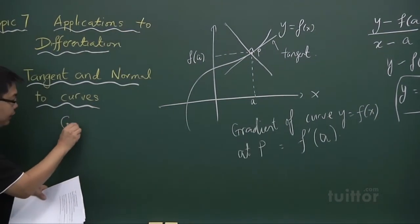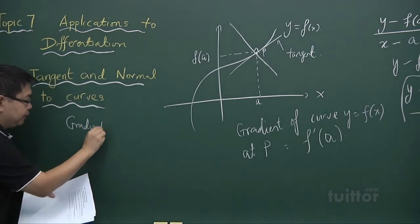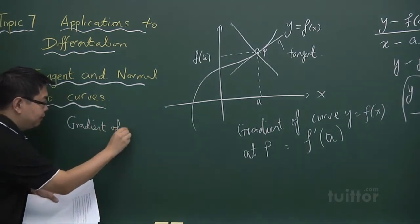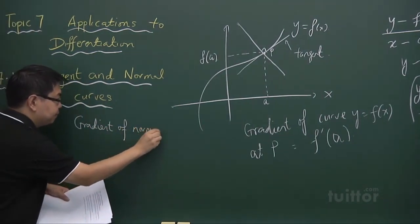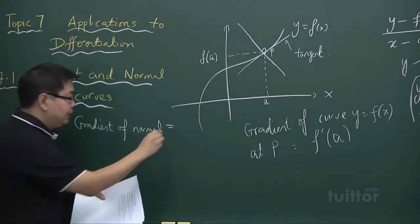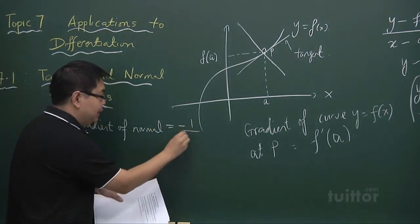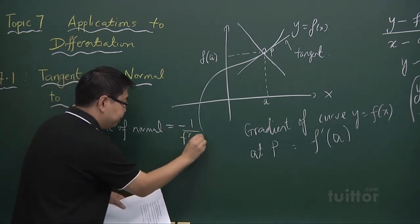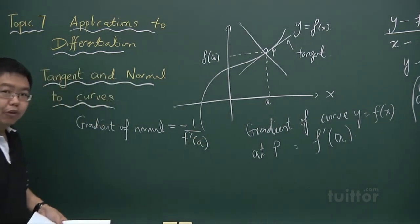First, looking at the gradient of the normal, that will be given by negative 1 over f prime of a. Now that is the gradient of the normal.